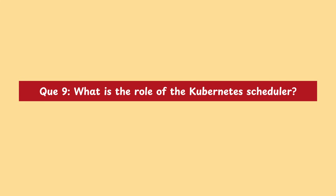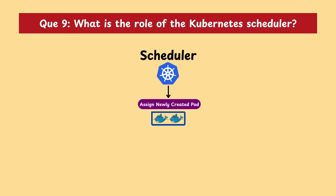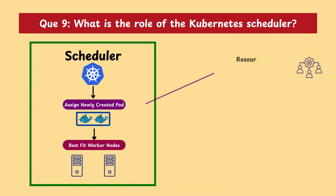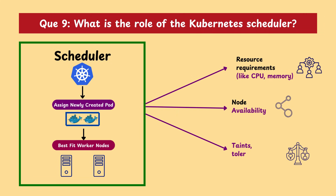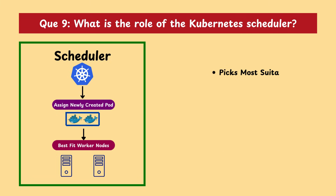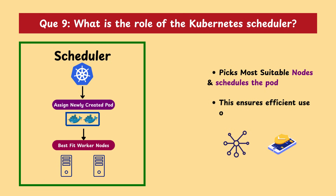Moving on with our next question: what is the role of a Kubernetes scheduler? The Kubernetes scheduler is responsible for assigning newly created pods to the best fit worker nodes. It checks resource requirements like CPU and memory, node availability, and taints, tolerations, and affinity rules. Based on these, it picks the most suitable node and schedules the pod there. This ensures efficient use of cluster resources and application performance.